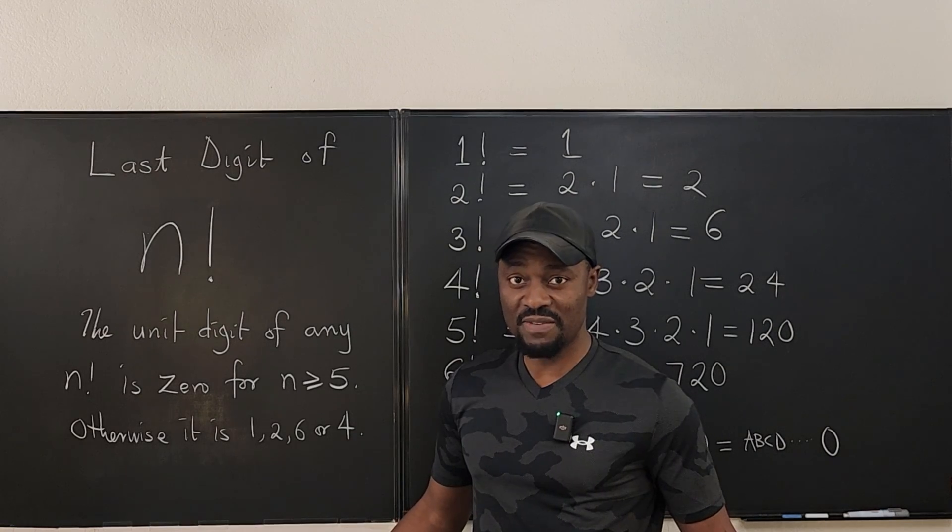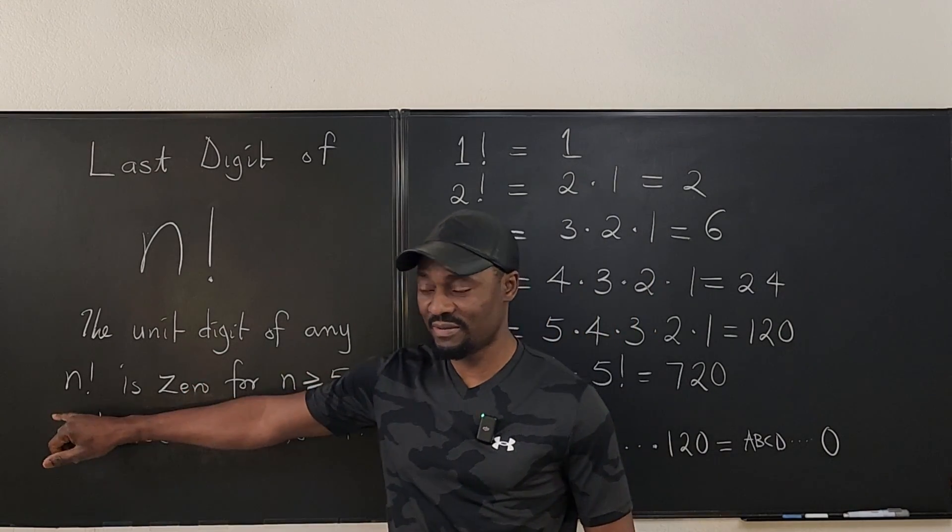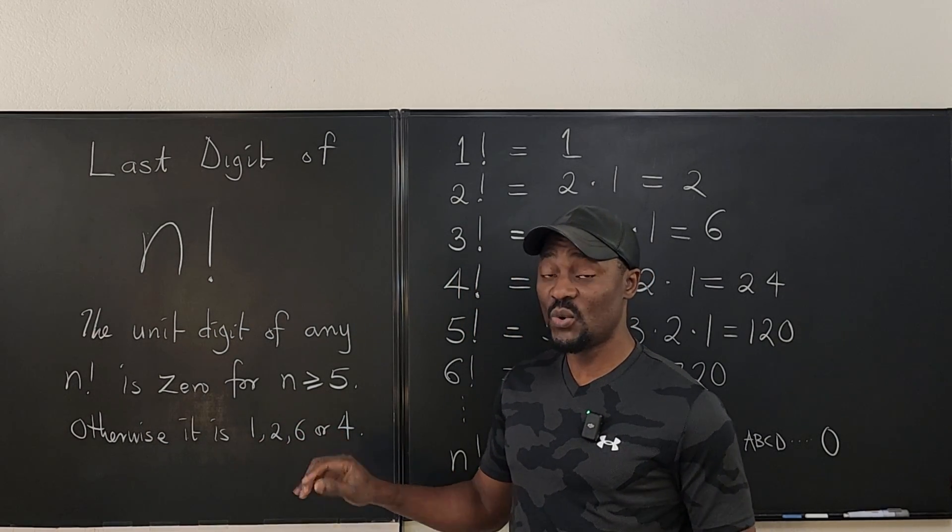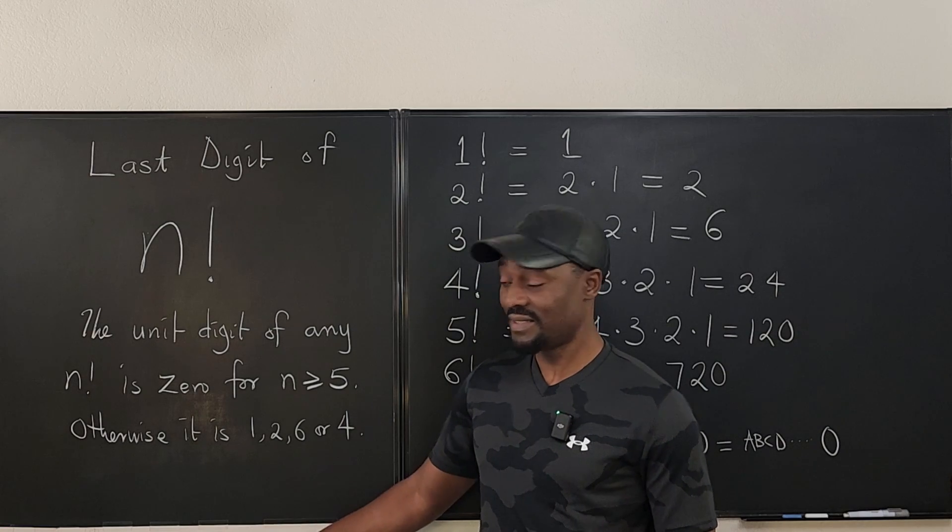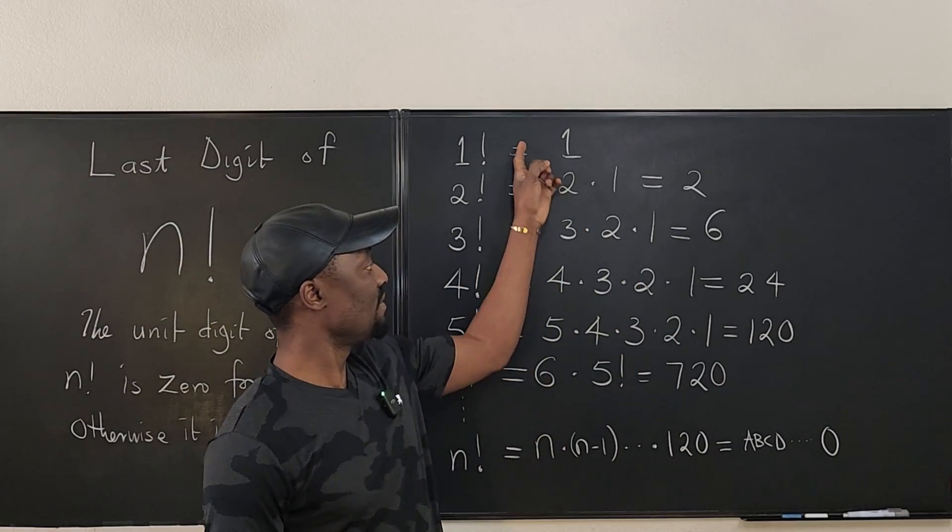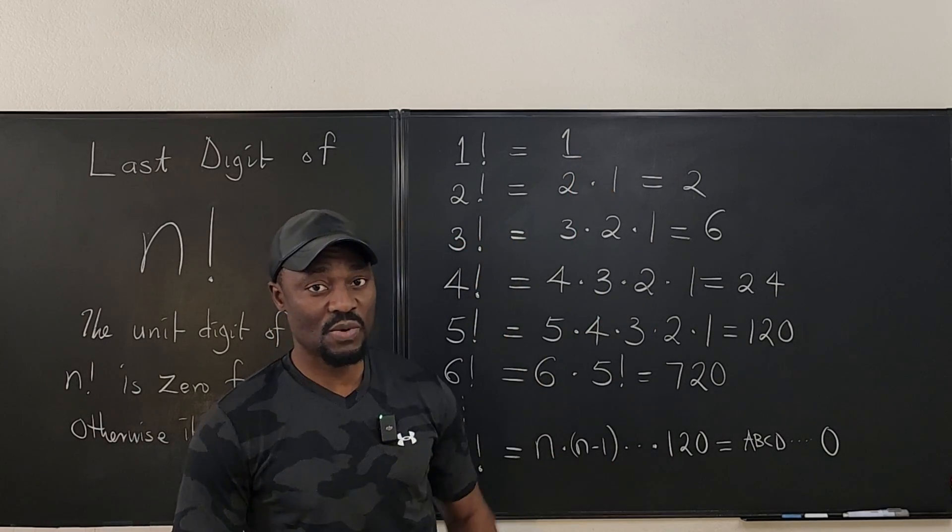So what I can say finally is the unit digit of any n factorial is zero for n greater than or equal to five. Otherwise, it is one, two, six, or four. It is one of these first calculations, including zero factorial, which is also one.